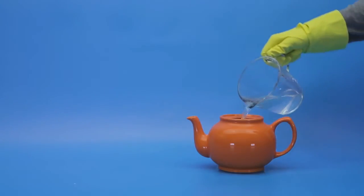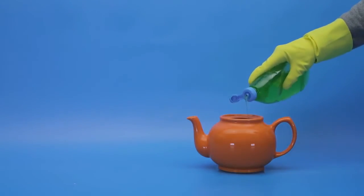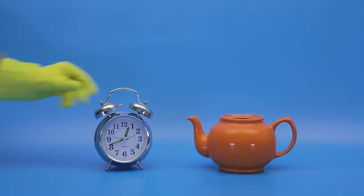For stubborn stains, use diluted dishwashing detergent such as Persil Washing Up Liquid. Fill the pot with this solution and leave overnight.